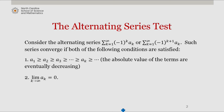The first condition is that every successive term is less than or equal to the previous one — that is, the absolute value of the terms are eventually decreasing. The second condition is that the limit of the general term a sub k as k approaches infinity equals 0.